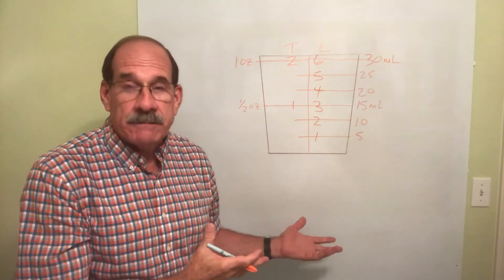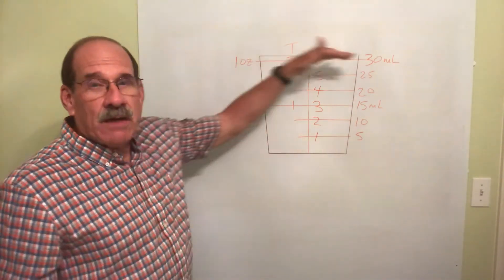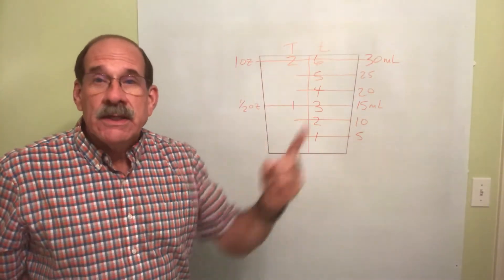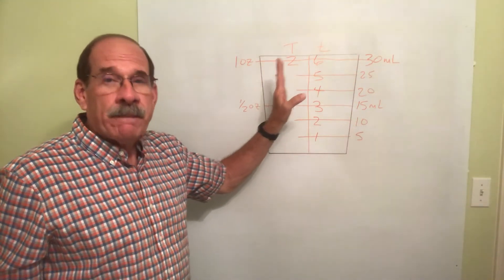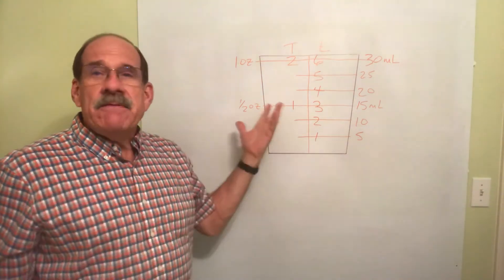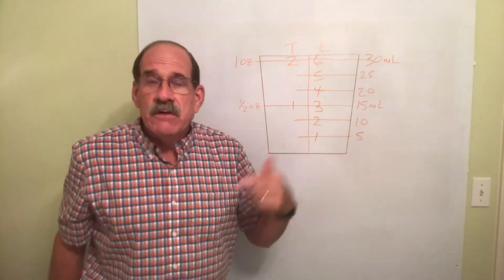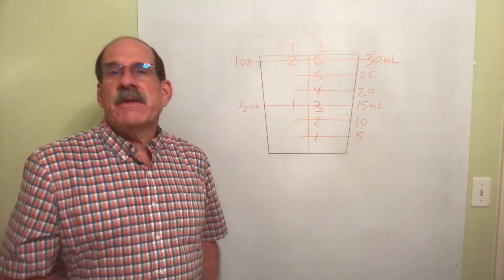Memorize this thing. The main ones, the top number, the top line. One ounce is 30 milliliters. That's two tablespoons. That's six teaspoons. Any of these, any one of those four, when you convert to the other ones, we'll be using this in the next video or two or three or four or for the rest of the semester, actually.